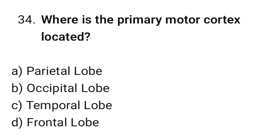Question number 34: Where is the primary motor cortex located? The correct option is D. Frontal lobe.